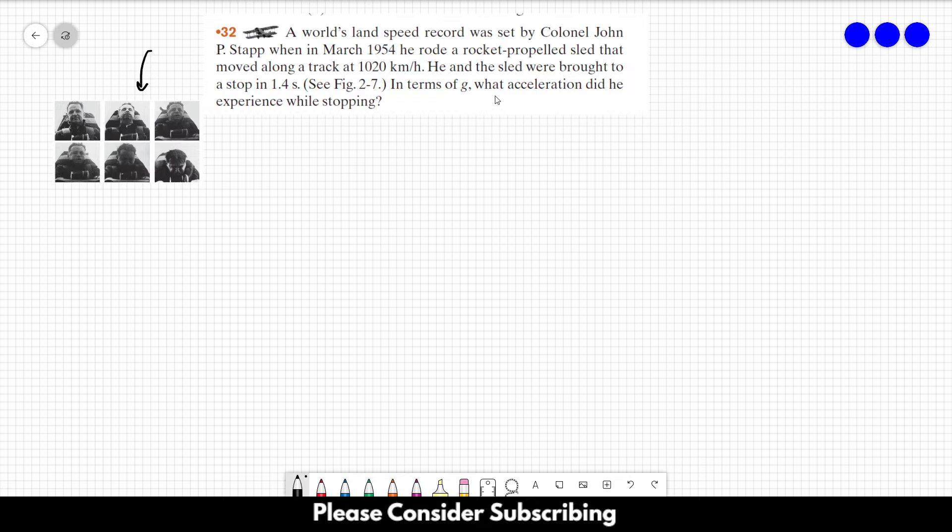So the initial speed of the colonel was 1020 km per hour. If we want to convert this to meters per second, we just have to divide it by 3.6 and then we find 283.33 meters per second. So this is the initial speed.